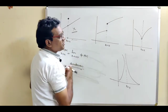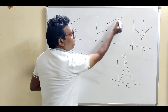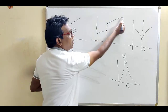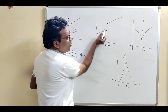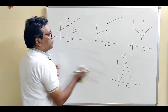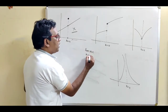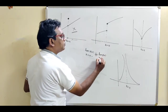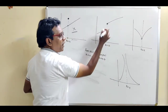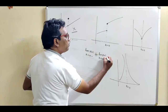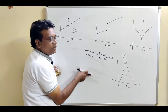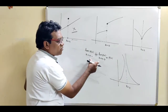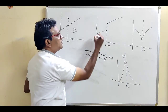For the second graph: limit from left and limit from right are different, so the limit does not exist. Since limit does not exist, we cannot compare with the value of function — so it is again a discontinuous function. For the third graph: limit from left and limit from right have the same value, so the limit exists. But at x equal to a, the value of function is undefined. Since the value of function is undefined, we cannot compare with the limit — so this is again a discontinuous function.